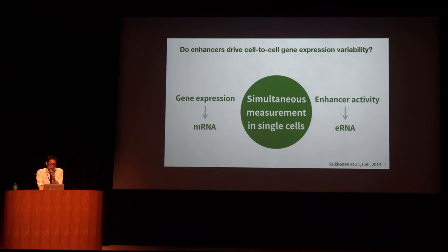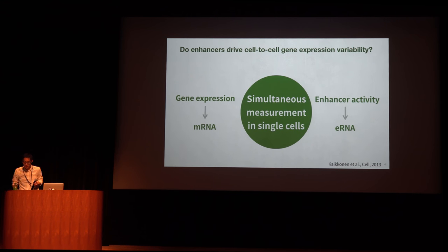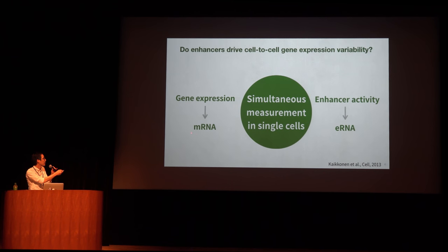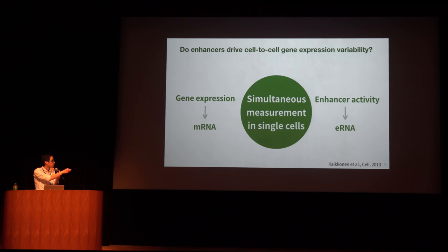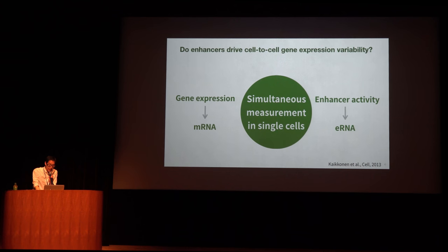A straightforward approach to this question is to measure both gene expression and enhancer activity in the same single cells. Gene expression can be measured by messenger RNA, and recent studies showed that enhancer activity in terms of active histone marks correlates with enhancer RNA transcription from the enhancer region. So, enhancer activity can be measured by enhancer RNA. Therefore, we can address the question by simultaneous measurement of messenger RNA and eRNA in single cells.